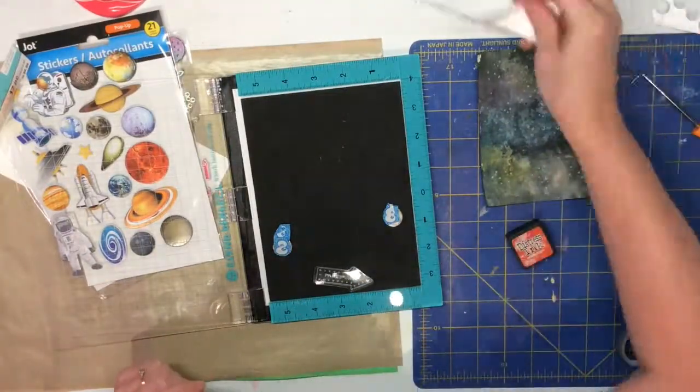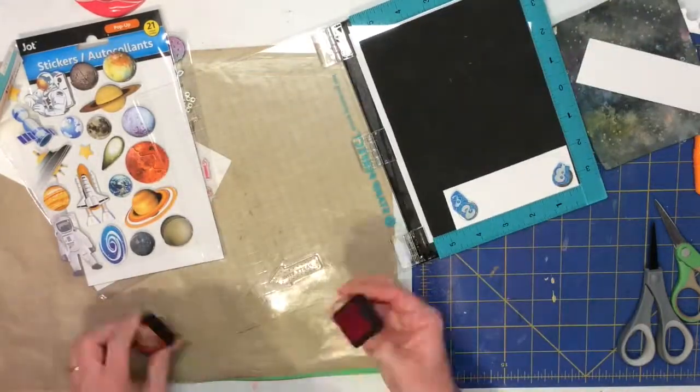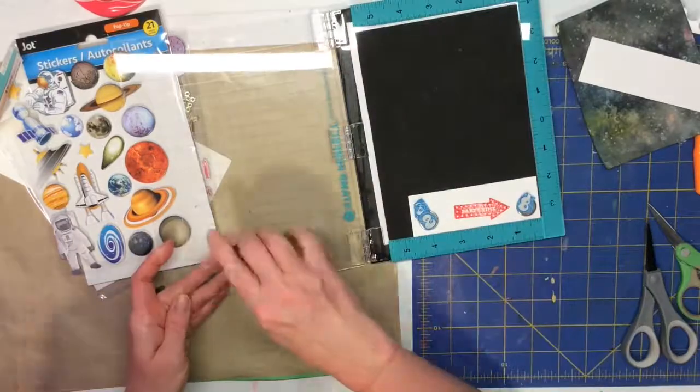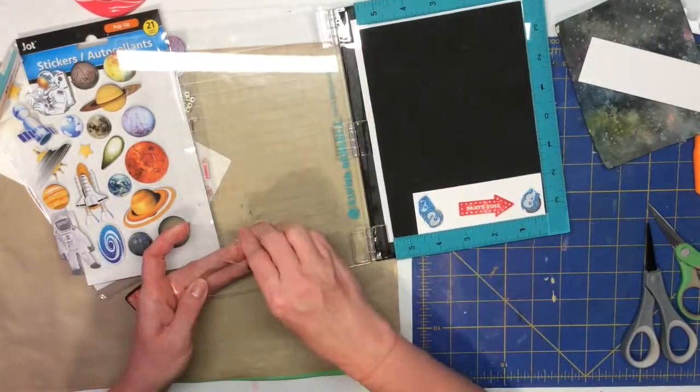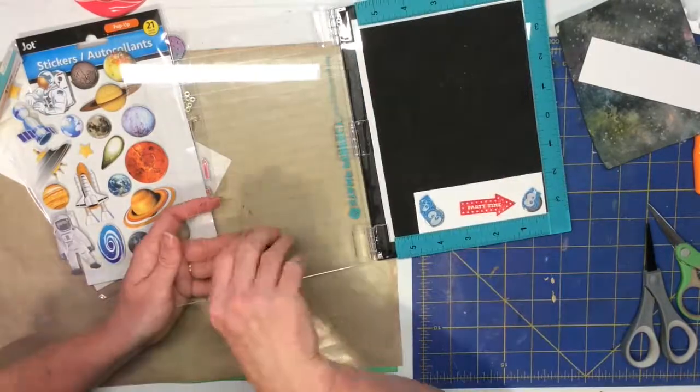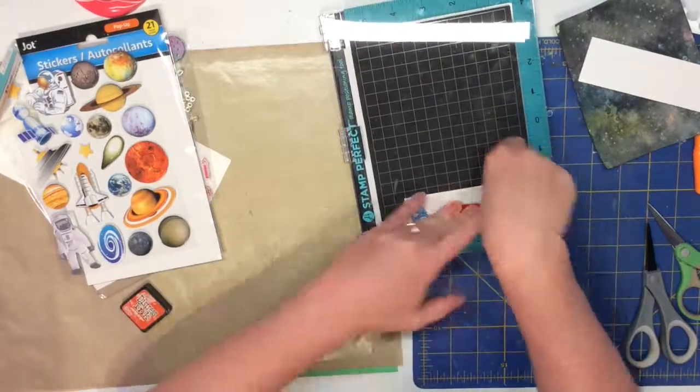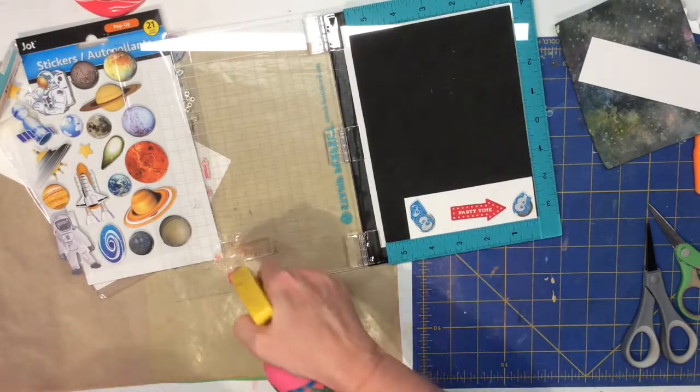I'm using a stamp that says Party Time, Little Arrow Stamp from Recollections Color Splash that I got at Michaels on a 70% off sale. So I'm using my Hampton Stamp Perfect Stamp Positioning Tool here to get a nice, clean, clear image of that stamp.